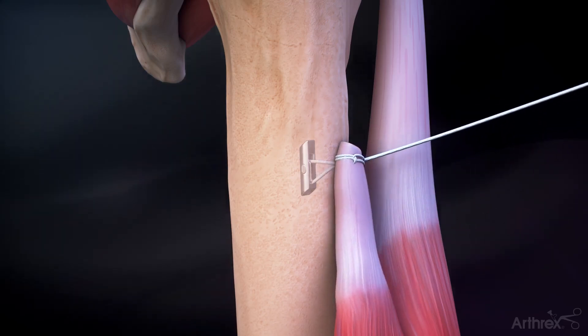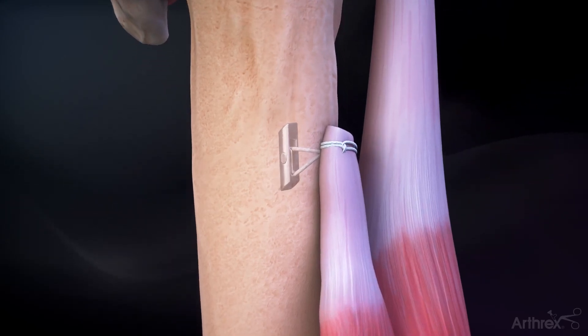Pull on the free suture limb to reduce the tendon onto the bone. Cut the excess suture to complete the tenodesis.